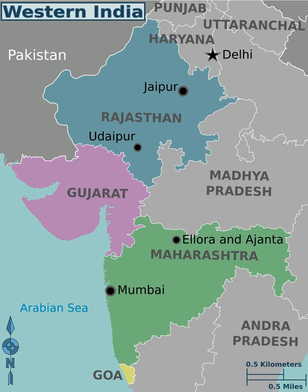Pune, a city in the western region, experiences temperatures around 40–42 degrees Celsius in summers and 6–7 degrees Celsius in winters. Gujarat also has a warm climate with hot summers and cool winters.